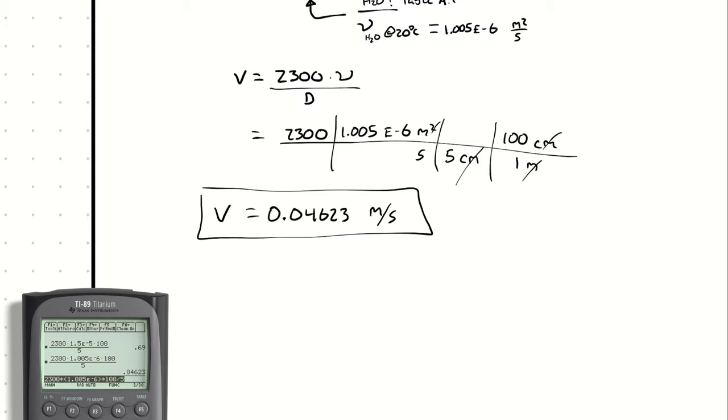So when considering a flow of water through a 5 centimeter diameter pipe, any average velocity less than 0.04623 meters per second, we will call laminar. Any velocity higher than 0.04623, we will call turbulent.